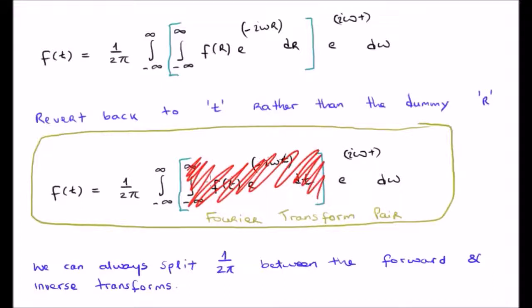We have something integrated d omega giving us a function of t. We didn't start with a function of t, so this suggests that this integral is in actual fact the transformed function. This suggests that the outer integral is the inverse Fourier transform and the inner integral is the forward Fourier transform.